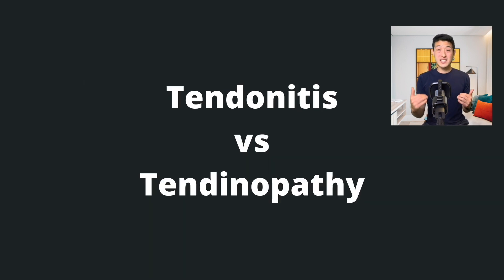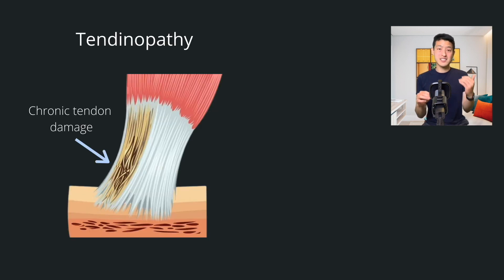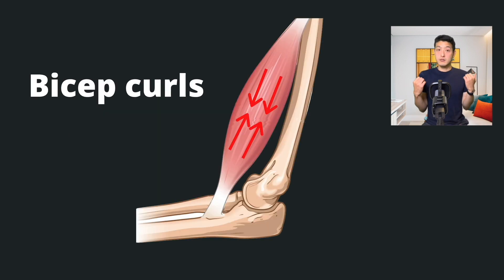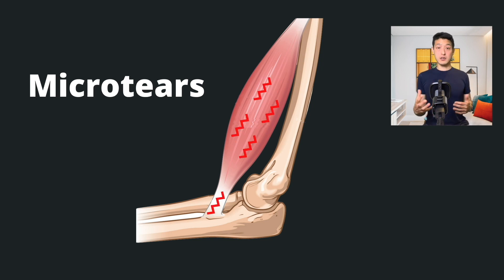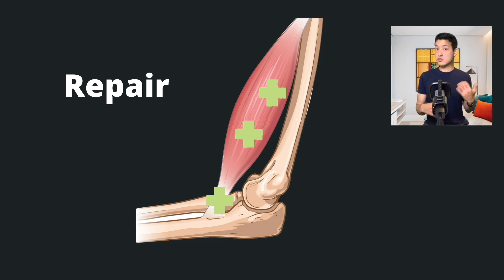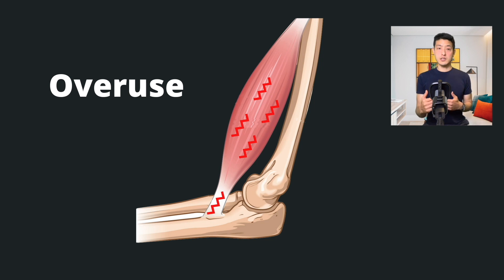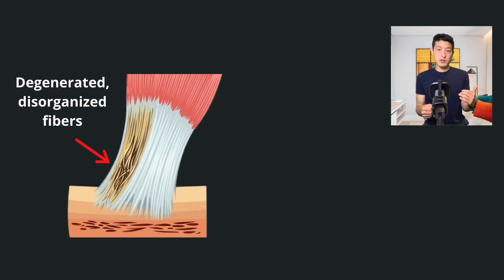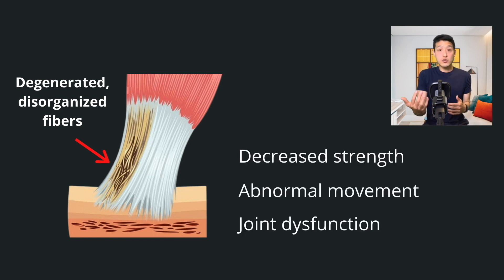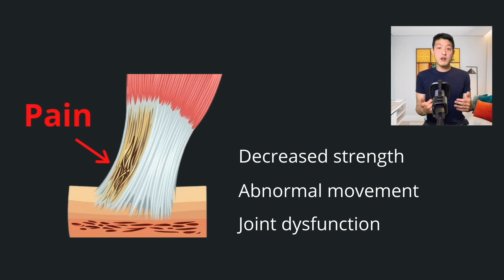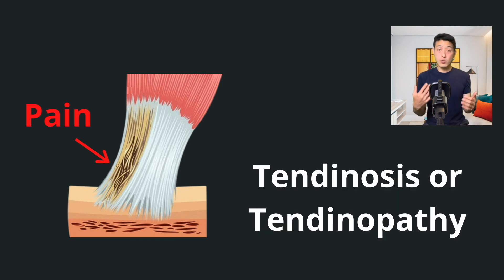So what's the difference between tendonitis and tendinopathy? The tendons in tendinopathy are chronically damaged. Let's imagine I went to the gym and started doing bicep curls. Every time I do a bicep curl, I'm causing small micro-tears to my muscles and my tendons. This is actually how things work — on rest days, my body will repair these tears and build back bigger and stronger. But in overuse injuries, our bodies don't have enough time to repair all of these micro-tears, so they start to add up. These micro-tears cause our tightly packed collagen fibers to degenerate and become disorganized, causing our tendons to lose their strength. This leads to abnormal movements, joint dysfunction, and ultimately pain. We call this degenerated and disorganized tendon tendinosis or tendinopathy.